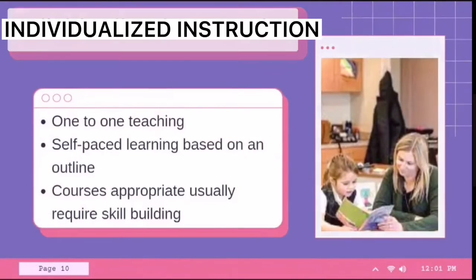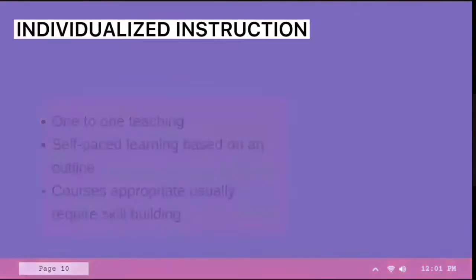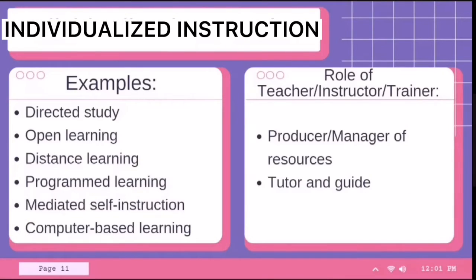Individualized instruction is a method of instruction in which there is one-to-one teaching and self-paced learning based on an outline of progressive goals leading to the course or curriculum objectives. Courses appropriate for individualized instruction are usually those that require skill building. Examples include directed study, open learning, distance learning, program learning and training, graded self-instruction, and computer-based learning. The role of the teacher here can be producer or manager of resources, as well as tutor and guide.